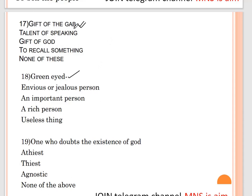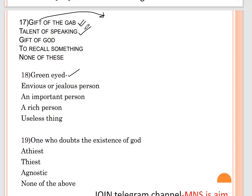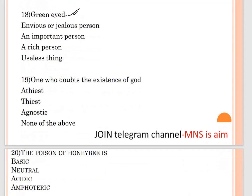Question number seventeen: 'gift of the gab' — options are talent of speaking, gift of god, to recall something, and none of these. The correct answer is talent of speaking. Question number eighteen: 'green-eyed' is an idiom — options are envious or jealous person, an important person, a rich person, or useless thing. Correct answer is option A — envious or jealous person.